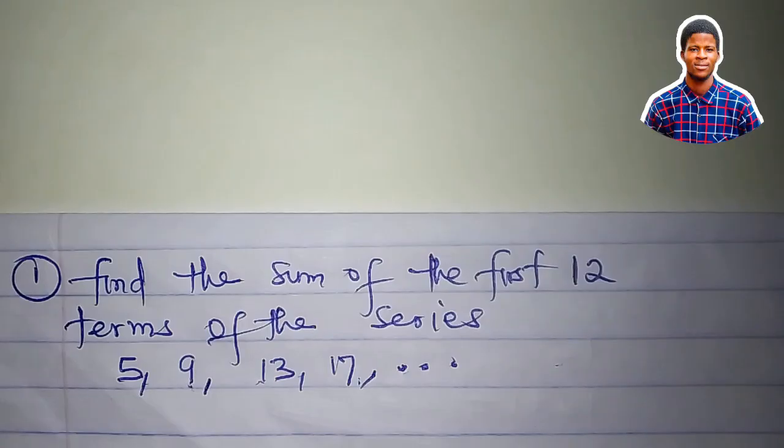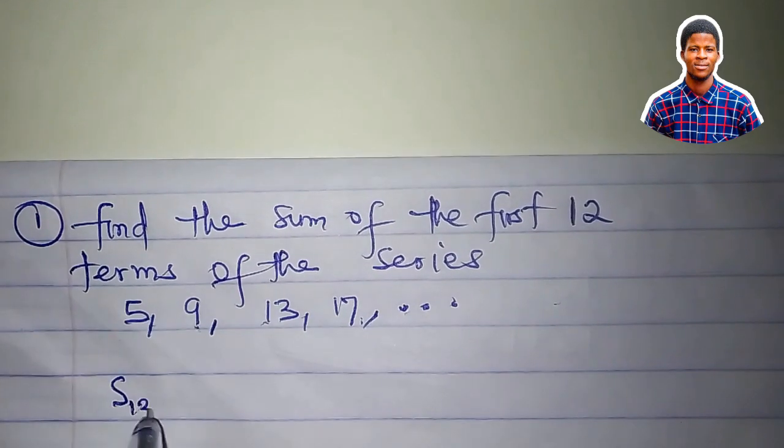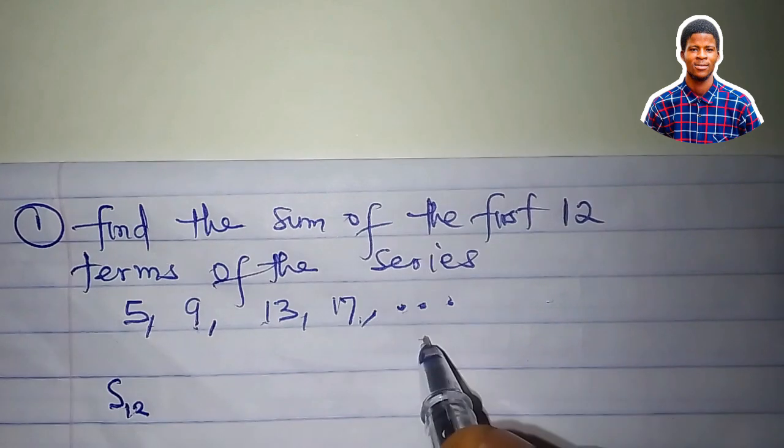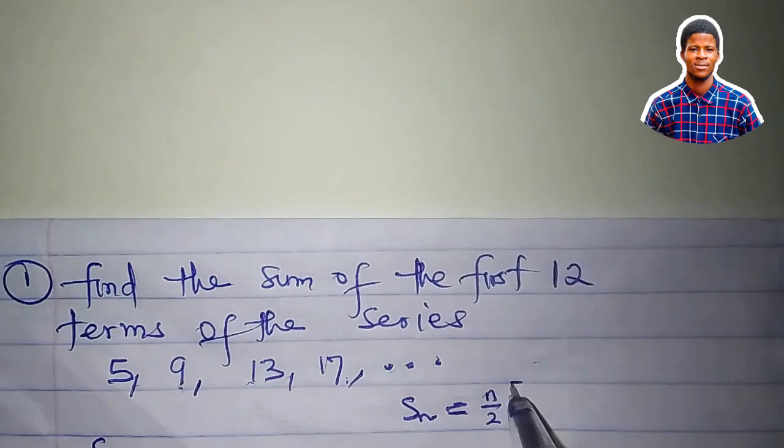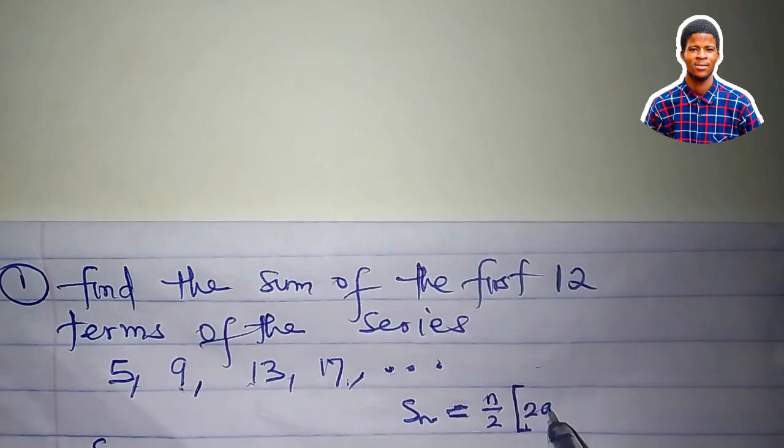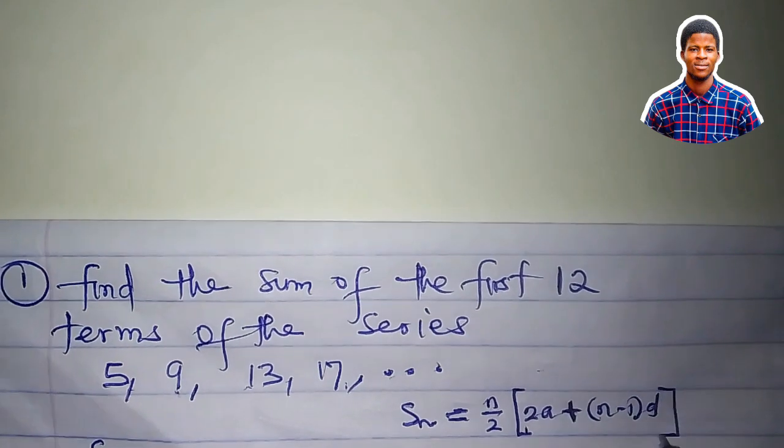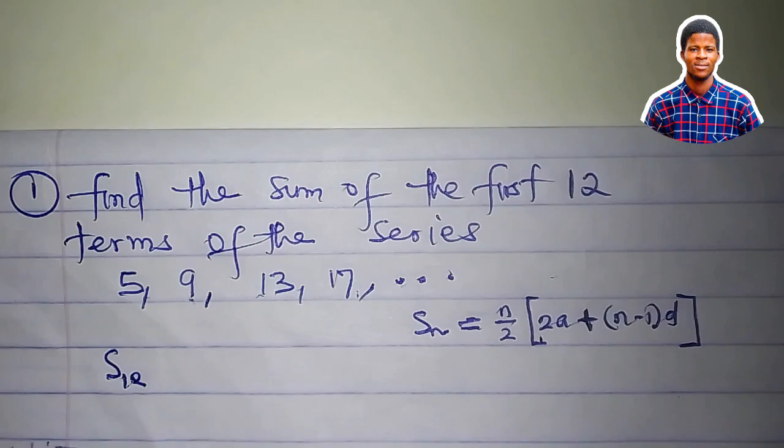We have to find the sum of the first 12. That would be S_12. So remember, S_n equals n over 2 in brackets, 2a plus (n-1)d. This is the formula to be used.